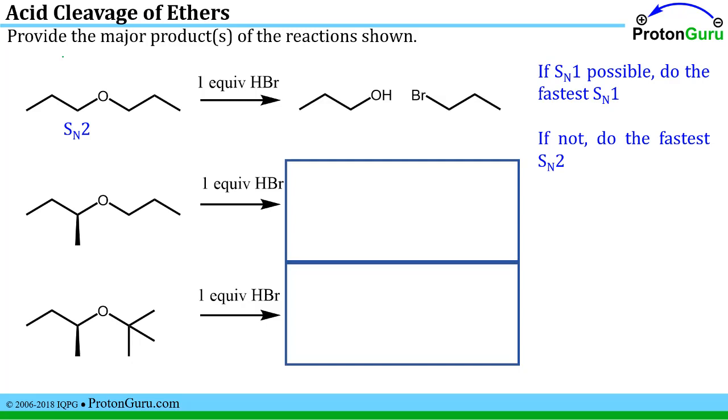If we think about the SN2 product, once this is a good leaving group and the bromide is a good nucleophile and comes in and attacks, you'll kick out one equivalent of propanol and one equivalent of bromopropane. Now this is with one equivalent of HBr. You don't have any more bromines or protons to protonate this, so the reaction would stop at that point.